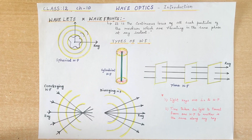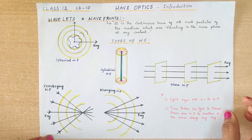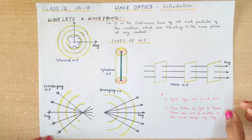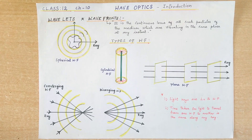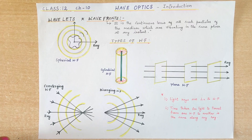Hello students. In this video we are going to learn about wave optics — it is chapter number 10. In our previous videos we have discussed about ray optics. Here we are going to discuss light as a wave, the wave nature of light. It is being supported by many theories in physics: corpuscular theory, Planck's quantum theory, electromagnetic wave theory, etc.